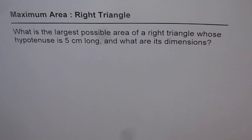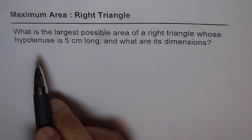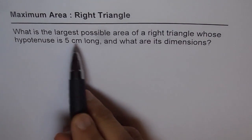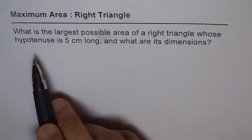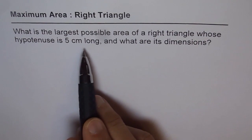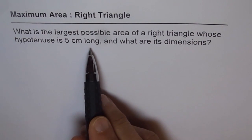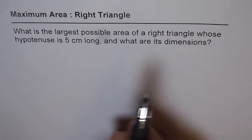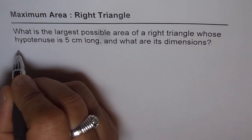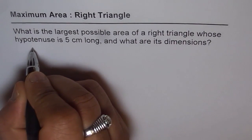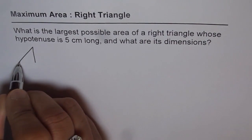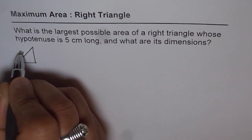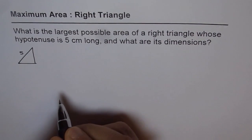Maximum area — we are considering a right triangle. What is the largest possible area of a right triangle whose hypotenuse is 5 cm long, and what are its dimensions? Let's consider a right triangle and we know that the hypotenuse is 5.